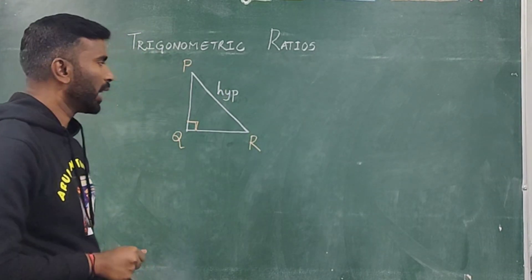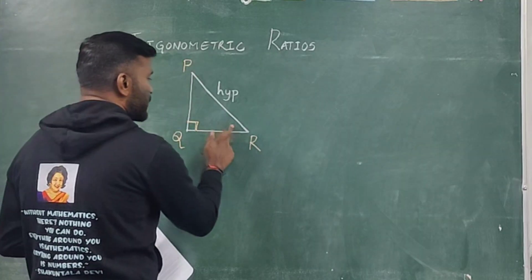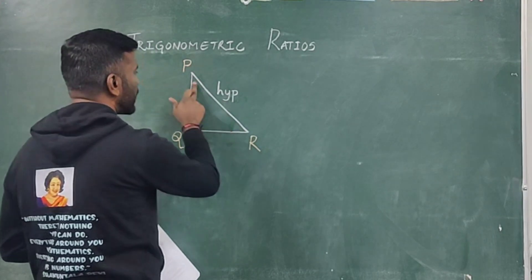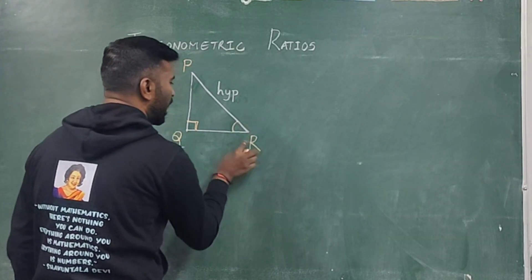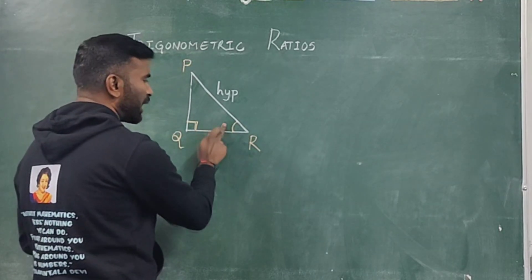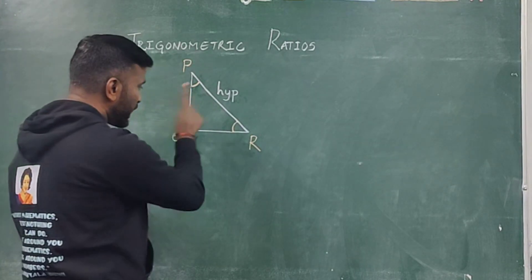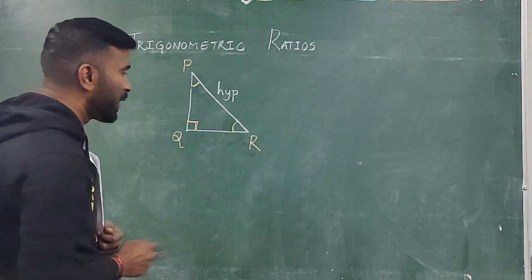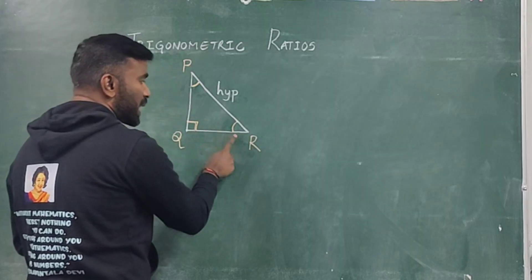The longest side of the triangle is called the hypotenuse. With respect to a given angle, there are two acute angles — angle R and angle P. You can represent angles by any symbol: theta, alpha, beta. One angle is 90 degrees and the other two are acute angles.